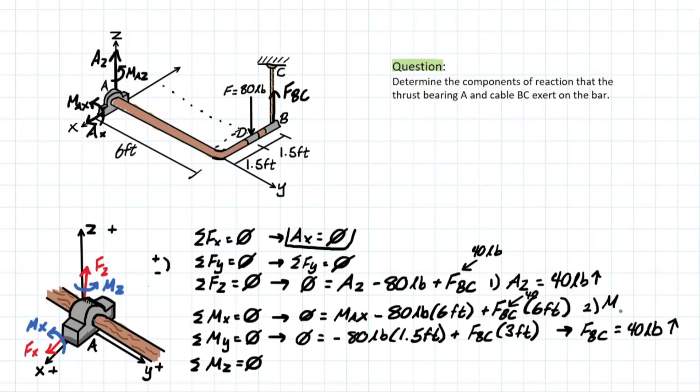Lastly, before we close out this problem, we just need to consider the MAz component here because it's still not solved for. So we are going to use summation of moment at Z is going to equal zero. And we've already talked about this before.